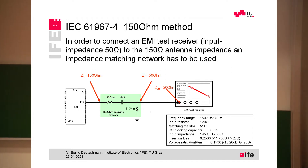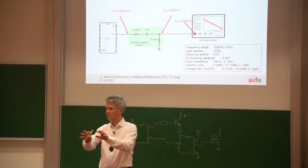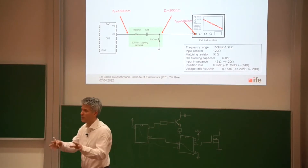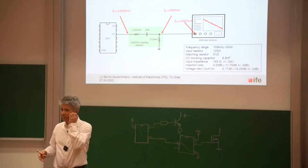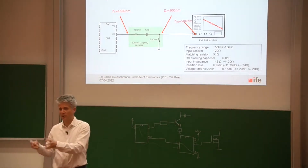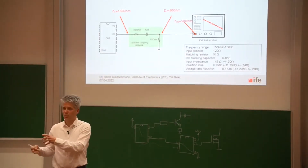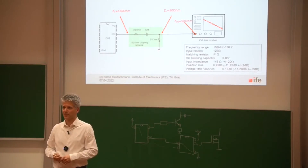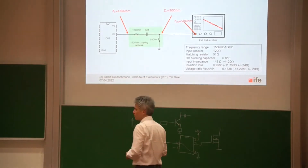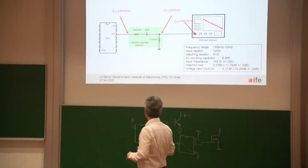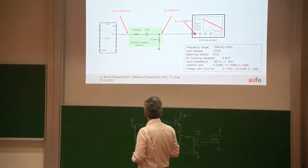It may not be exactly 150 ohm, but if every IC manufacturer and customer uses exactly the same network, the same layout, and the same components, then the results can be compared easily. This is the big advantage of this measurement technique: it is very reproducible, very simple, and provides a wide dynamic range and wide frequency range.